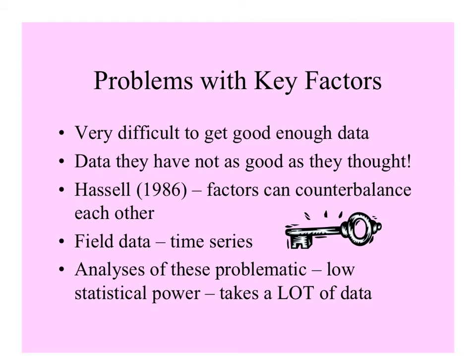Objections to key factor analysis are that it takes a long time to get good enough data, and some large datasets may not have been as reliable as assumed. Scientists have also pointed out that factors can counterbalance each other in ways the equation might not detect. Basically, a very long time series of field data is needed to determine which killing factors are most important, and of course things can change over time.